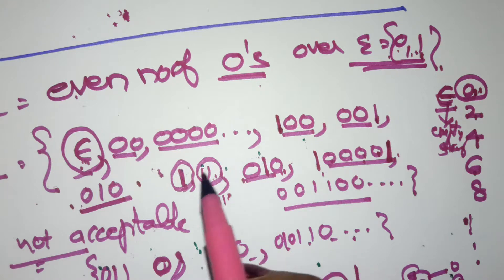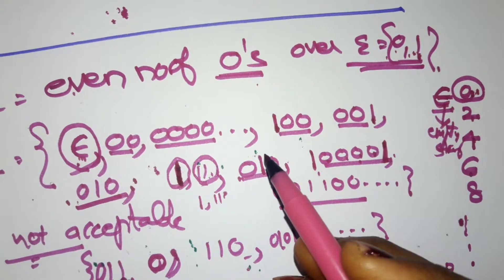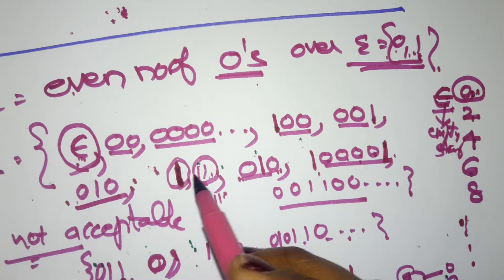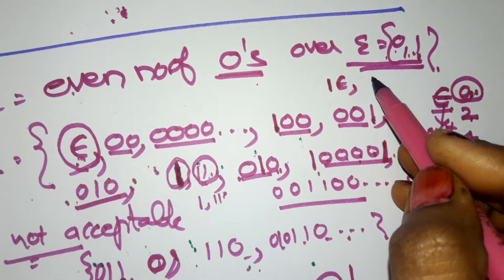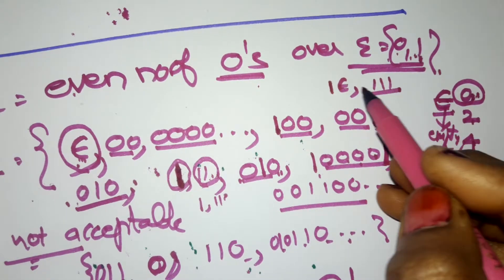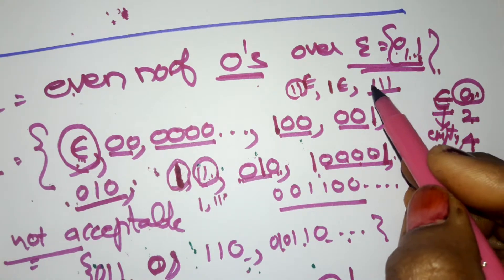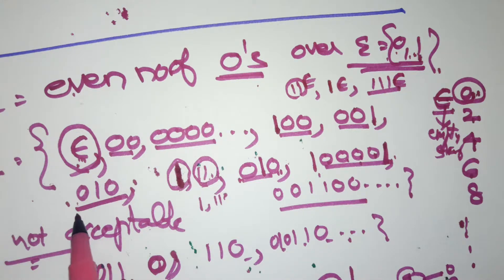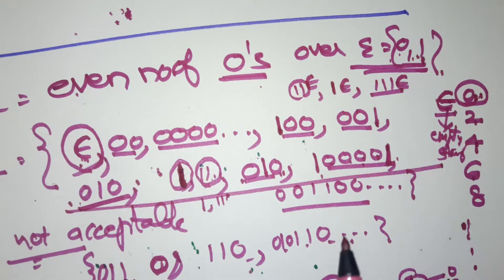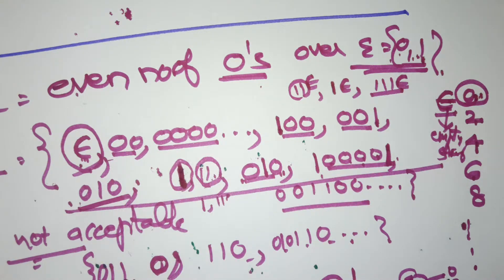One more point to remember: for even number of zeros, a string of only ones is also acceptable. For example, one '1' or three '1's are acceptable because they represent zero zeros. Two ones or any number of ones are acceptable because they represent zero number of zeros. So these are some acceptable strings, and it is better to write them out before designing the DFA.